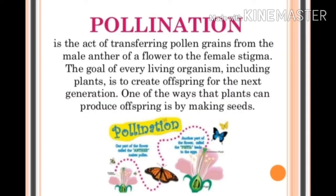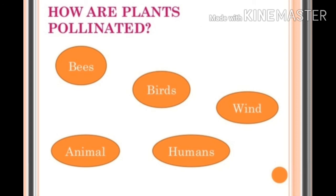Pollination is the act of transferring pollen grains from the male anther of a flower to the female stigma. The goal of every living organism, including plants, is to create offspring for the next generation — reproduction. One way that plants produce offspring is by making seeds. You can see from the picture how pollination is done — it is done with the help of butterflies or other insects.